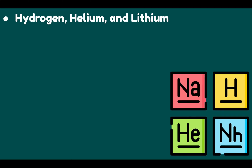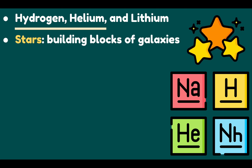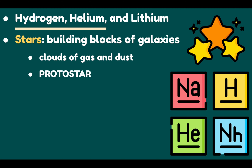Hydrogen, helium, and lithium are the three most abundant elements in the universe. Having the lowest mass, these were the first elements formed in the Big Bang. Stars, which are the building blocks of galaxies, are born out of clouds of gas and dust. Instabilities within the clouds eventually result in gravitational collapse, rotation, heating up, and transformation into a protostar.